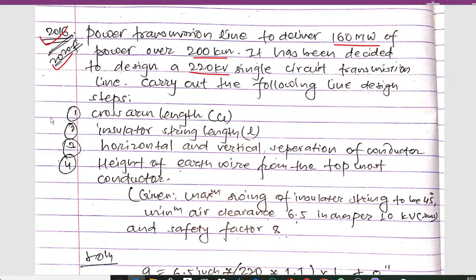We have to carry out the following line design steps: first, determine the cross arm length CL; second, calculate the insulator string length L; third, calculate the horizontal and vertical separation of the conductors; and fourth, calculate the height of the earth wire from the topmost conductor.